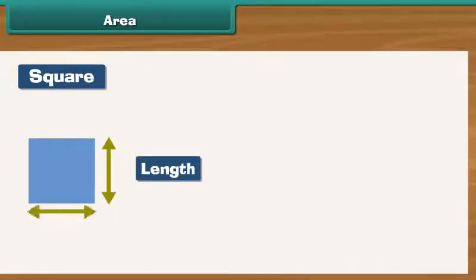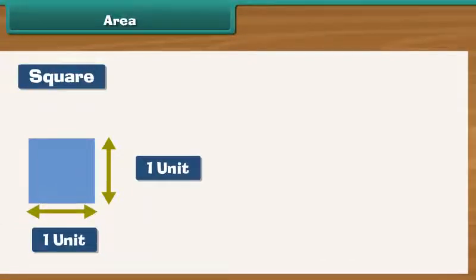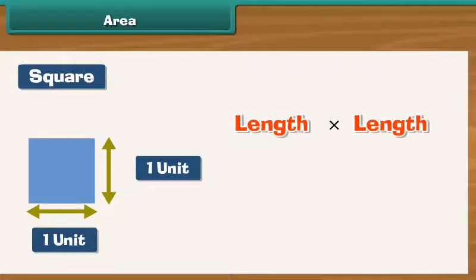whose length is equal to its breadth. Consider a square of length one unit. The area of a square is length into length. Therefore, the area of the square with length one unit is one into one, which is equal to one unit square.